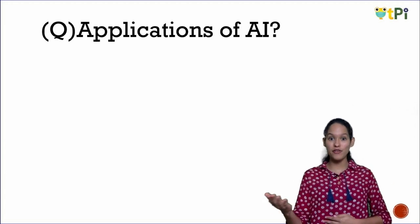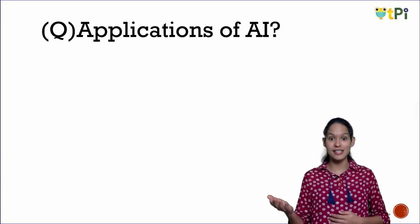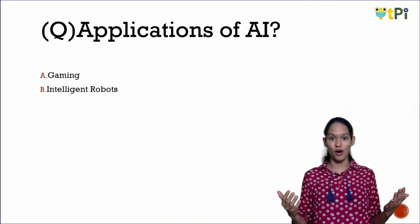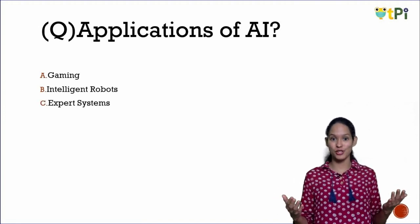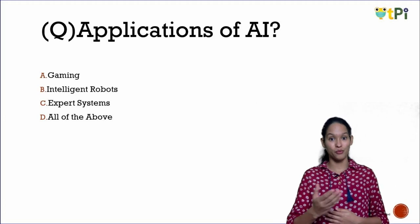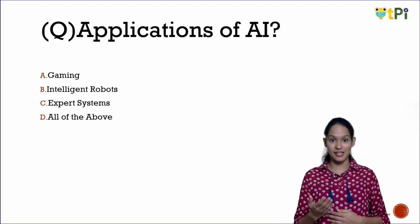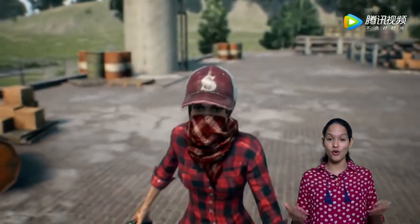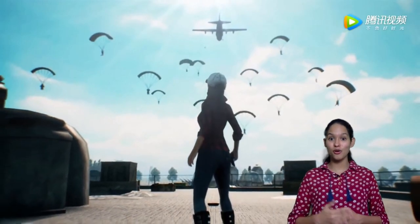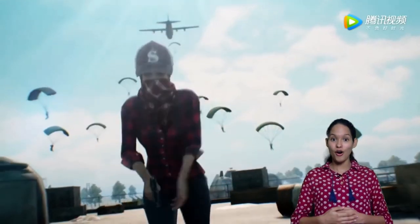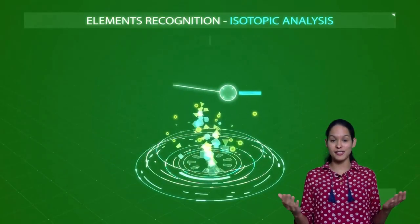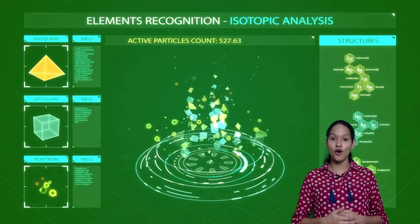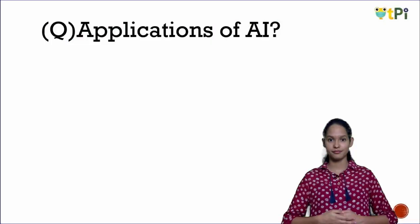Applications of AI — what do you think? Option A: gaming; Option B: intelligent robots; Option C: expert systems; Option D: all of the above. I think it's Option D — all of the above. Many games use AI such as chess or even the bot in PUBG. Intelligent robots like Sophia the robot. Expert systems are machines or software that provide expert advice or explanation to the user.